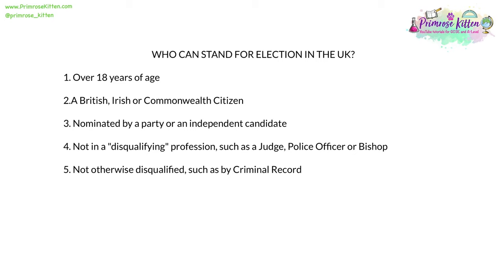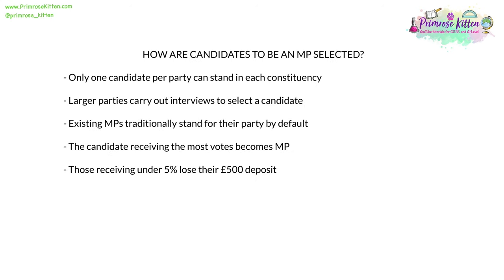So who can stand for election in the UK? They must be over 18 years of age, a British, Irish or Commonwealth citizen, and must either be nominated by a party or be an independent candidate. They must not be in a disqualifying profession, such as a judge, police officer or bishop, where they may have a conflict of interest between their profession and their responsibilities as an elected individual. And they may not be otherwise disqualified, such as by bankruptcy or criminal record. Regarding candidate selection, only one candidate per party can stand in each constituency. Larger parties generally carry out interviews to select candidates, as there may be competition. Existing MPs traditionally get to stand for their party by default. The candidate receiving most votes in each constituency becomes that constituency's MP, but those receiving under 5% of the vote lose their £500 deposit paid to the electoral commission.